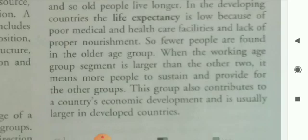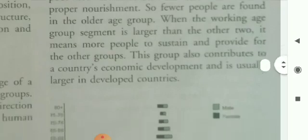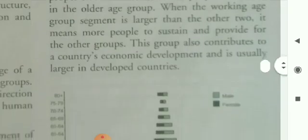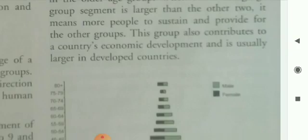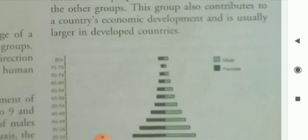In developing countries, the life expectancy is low because of poor medical and health care facilities and lack of proper nourishment. So fewer people are found in the older age group. When the working age group segment is larger than the other two, it means more people to sustain and provide for the other groups. This group also contributes to a country's economic development and is usually larger in developed countries.